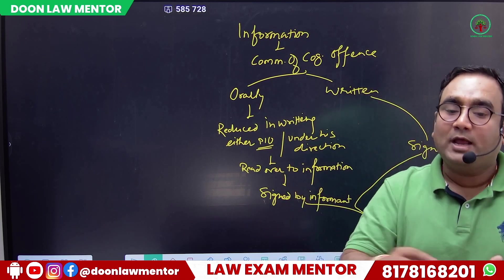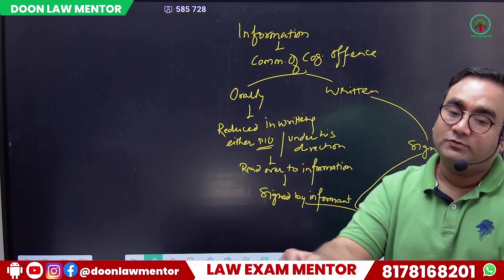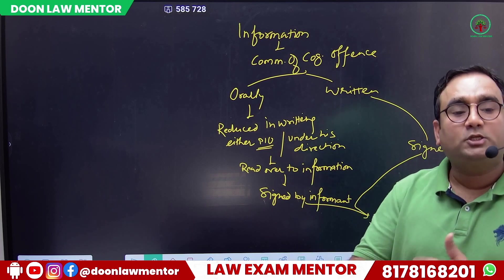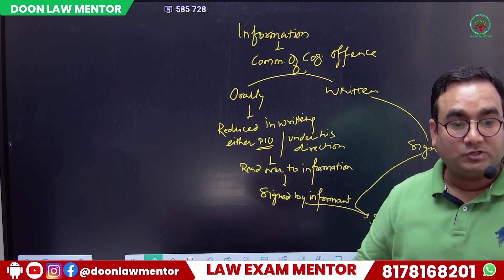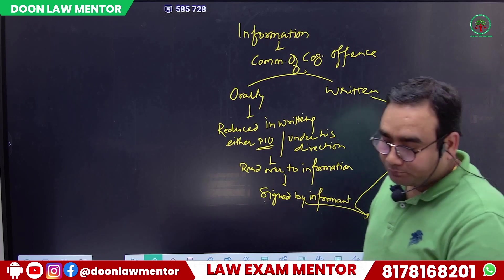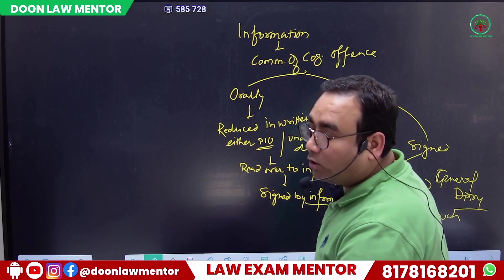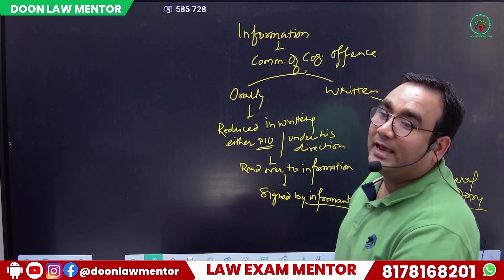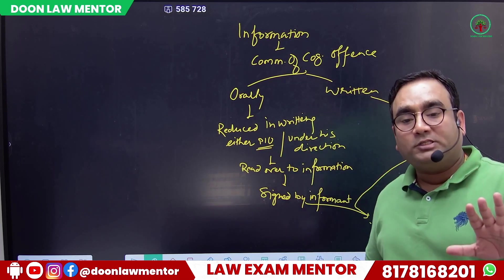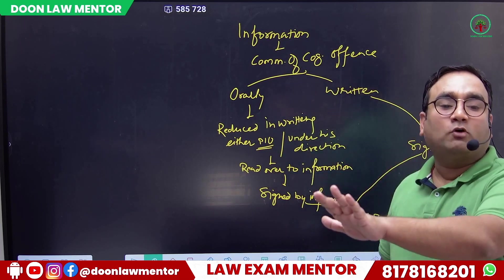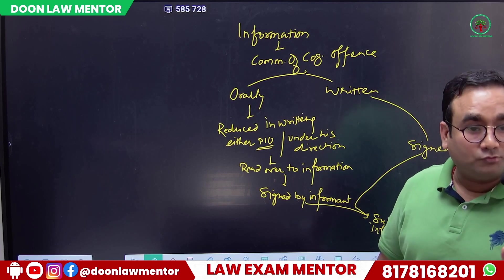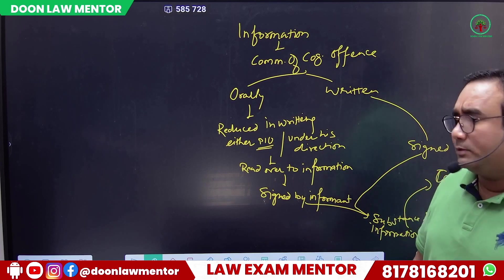So only the crux matters: on the date of offense, the accused did this, and on the basis of that, investigation starts in those specific points. Prima facie it appears this is a cognizable offense, and falls under this section — we are starting our investigation. That is the purpose.